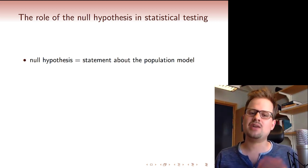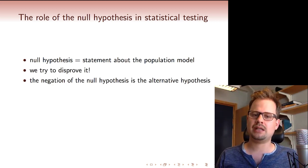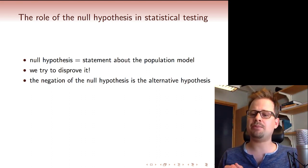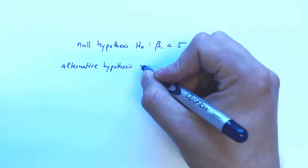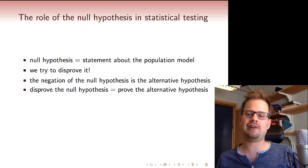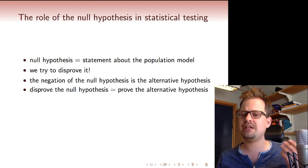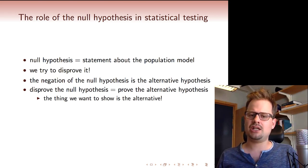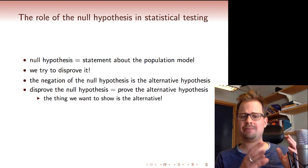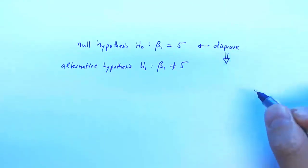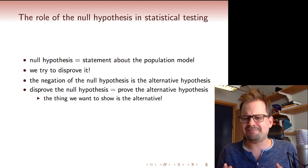The thing with the null hypothesis is we want to disprove it. The negation of the null hypothesis is called the alternative hypothesis. So in our example, the alternative hypothesis would be beta1 is unequal to 5. If we disprove the null hypothesis, then we show that the alternative hypothesis is true. So it works like this: You have something that you want to show. You negate it. You get your null hypothesis. You disprove the null hypothesis. You have shown that the alternative hypothesis is true. So it's kind of like a proof by contradiction.